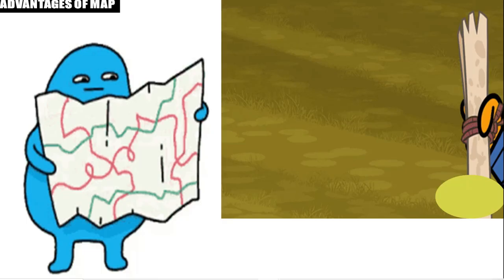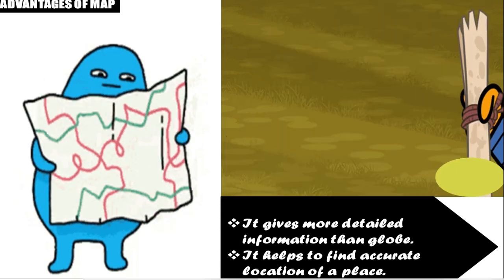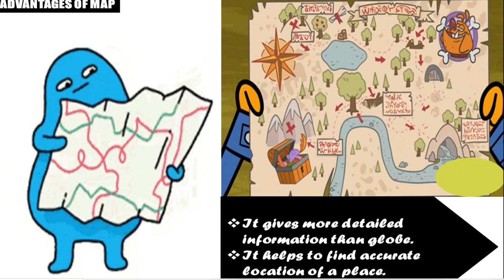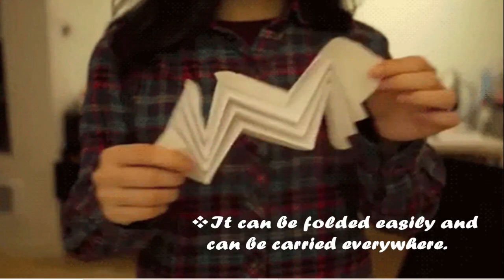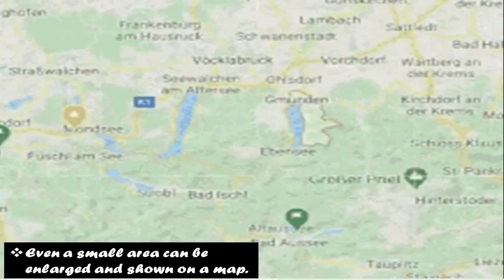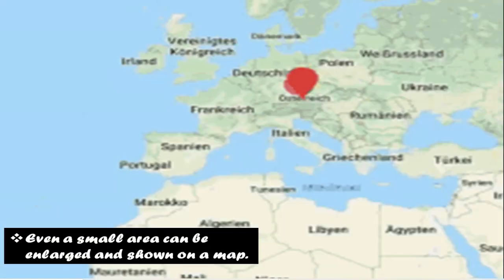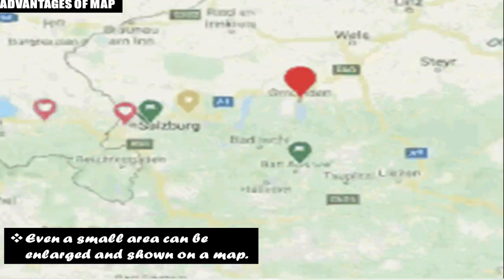Maps give us more detailed information than a globe and help us find the accurate location of a place. Maps can be easily folded and carried everywhere, making them much easier to transport than a globe. Even if you want detailed information about a small area, it can be enlarged and shown on a map.